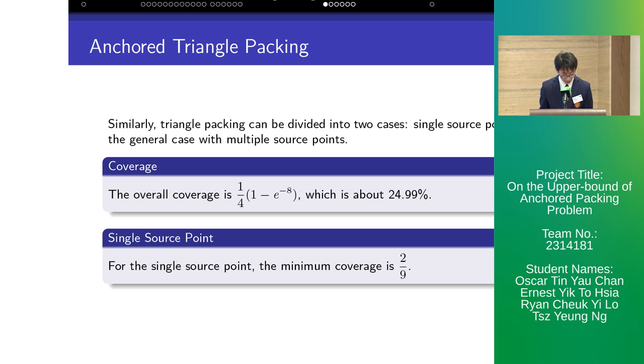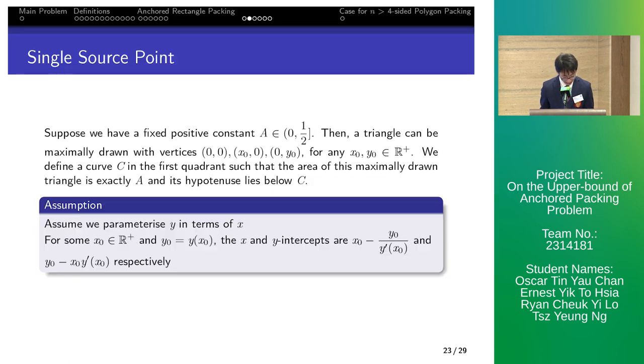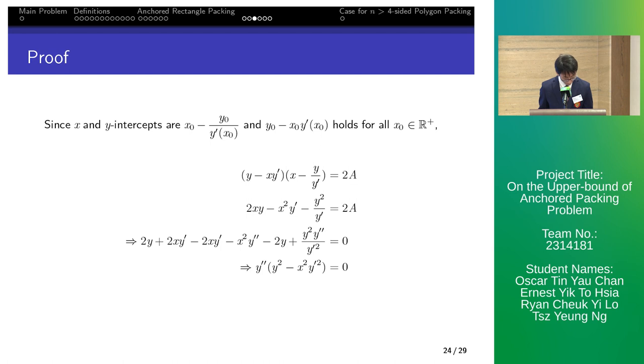Similarly, triangle packing is divided to two cases, single source point and a general case. The overall coverage is 1 minus d to the negative 8 over 4, which is about 24.99%. For single source point, we first find a curve c in the first quadrant such as the area of triangle maximally drawn with sides on xy-axis and the hypotenuse lies below c is exactly a, the maximal triangle area. Assume we get parameterized y in terms of x, the x and y intercepts are shown on the side in relation with the derivative. Since this solve for all x0, we derive a differential equation for curve c.